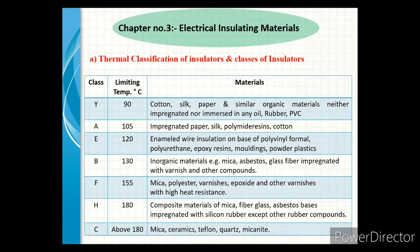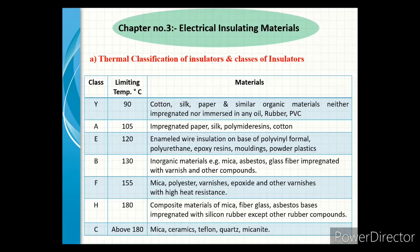The first class is thermal withstand ability. In this class, insulating materials are classified into seven categories: Y class, A class, E class, B class, F class, H class, and C class — each depending on limiting temperature range. The first class, Y class, has a limiting temperature of 90°C. Materials included are cotton, silk, paper, and similar organic materials neither impregnated nor immersed in any oil, rubber, and similar things.